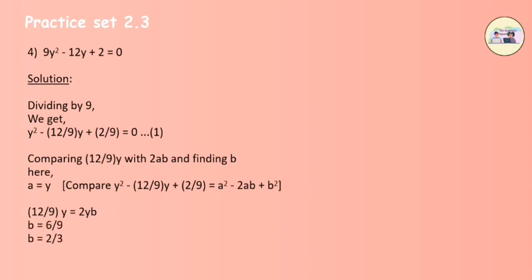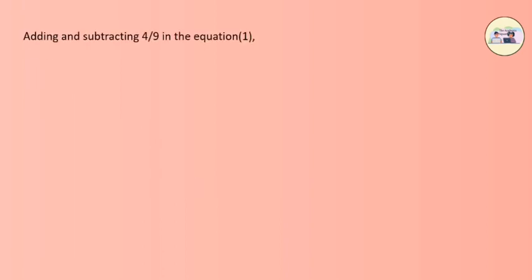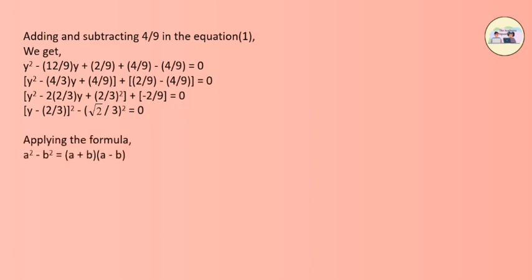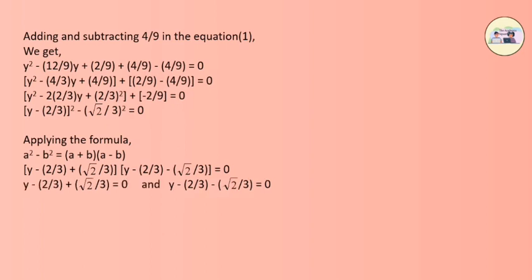Therefore, b squared becomes 4 by 9. Adding and subtracting 4 by 9 in equation 1, we get y squared minus 12 by 9 y plus 2 by 9 plus 4 by 9 minus 4 by 9 equals to 0. After further solving, we get the equation as (y minus 2 by 3) squared minus (root 2 by 3) squared equals to 0. Applying the formula a squared minus b squared equals to (a + b)(a minus b), and separating, we get y minus 2 by 3 plus root 2 by 3 equals to 0, and y minus 2 by 3 minus root 2 by 3 equals to 0.